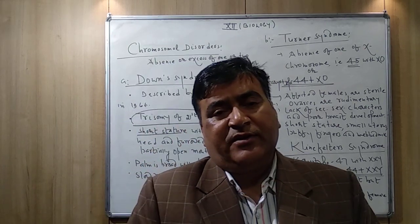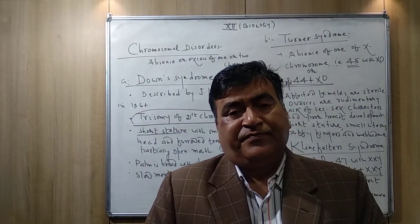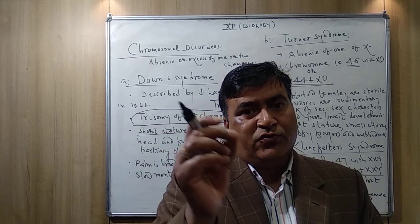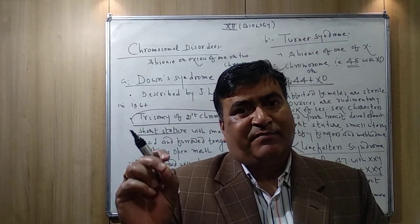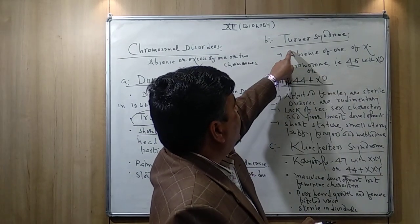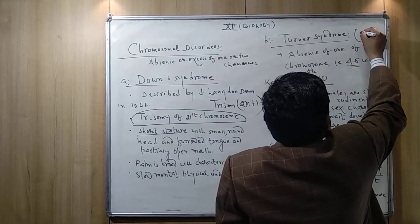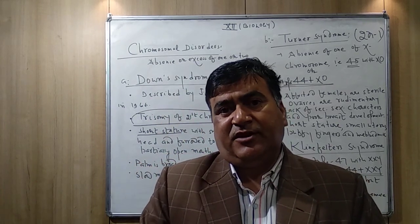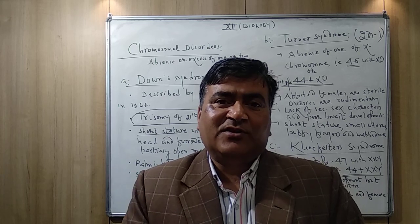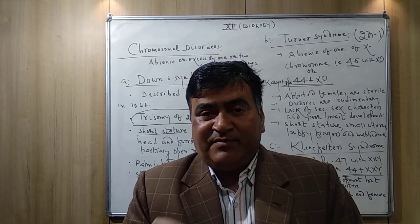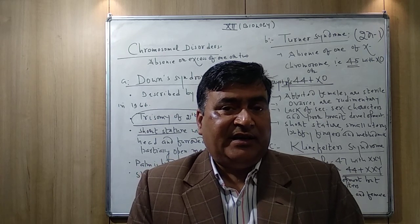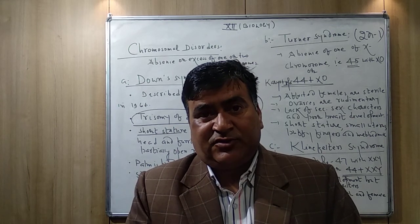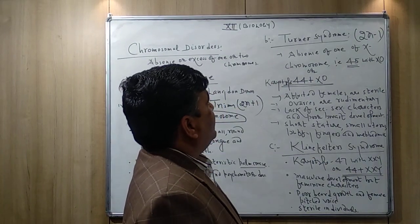The second disorder is Turner syndrome, which is a good example of monosomy. The formula of monosomy is 2n−1. The normal chromosome number is 46, and one chromosome is missing — that missing chromosome is the X chromosome. So there is a missing X chromosome in Turner syndrome.